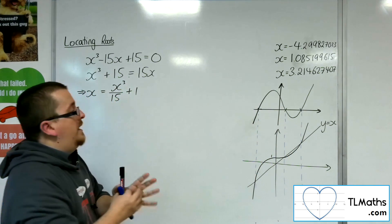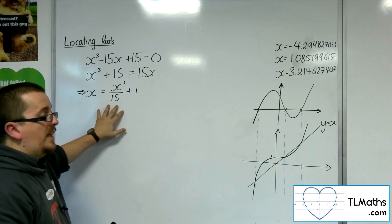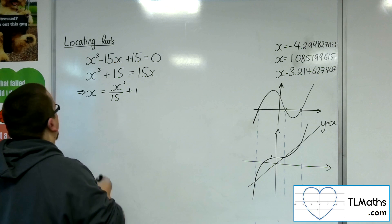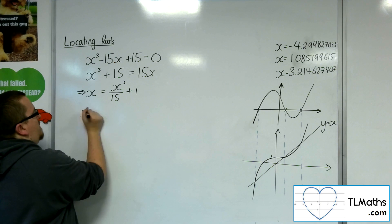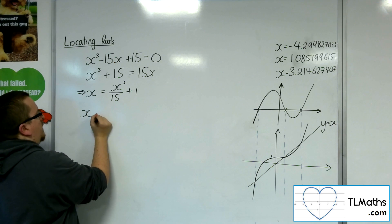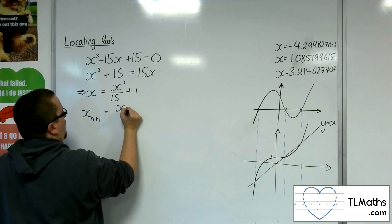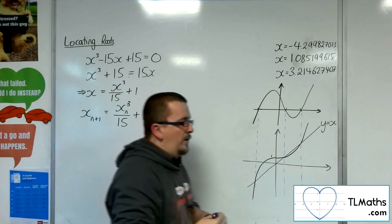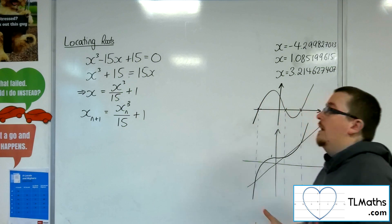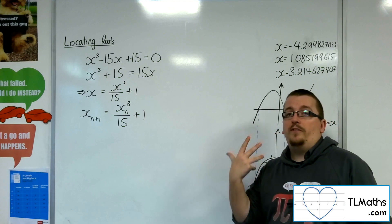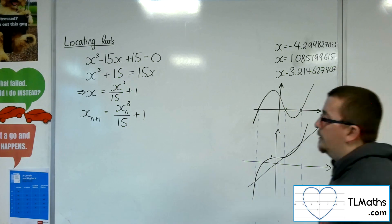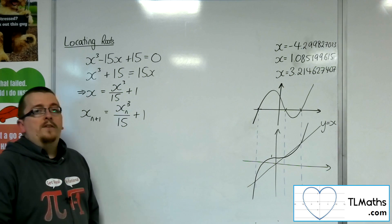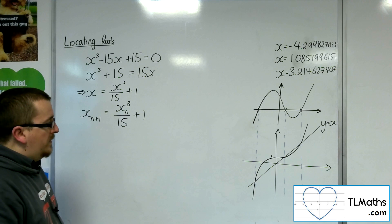Now let's turn this from an equation into a recurrence relation. I'm going to rewrite this as x subscript n plus 1 is equal to x subscript n cubed over 15, plus 1. This is a rule that will allow me to get from one term to the next.